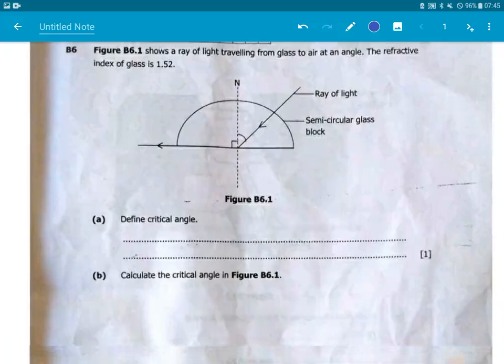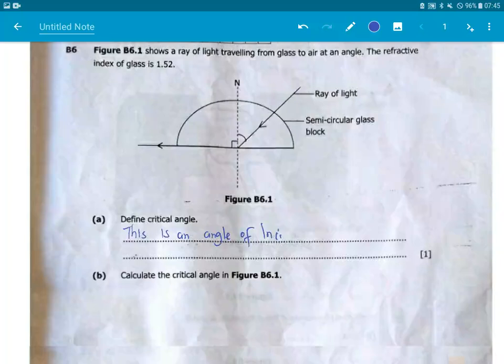What is a critical angle? A critical angle is an angle of incidence whose angle of refraction is 90 degrees. You end there, and you put a full stop. That's what a critical angle is.